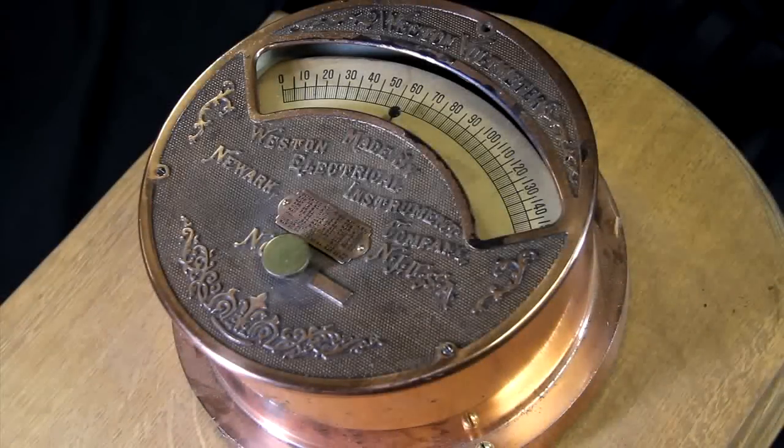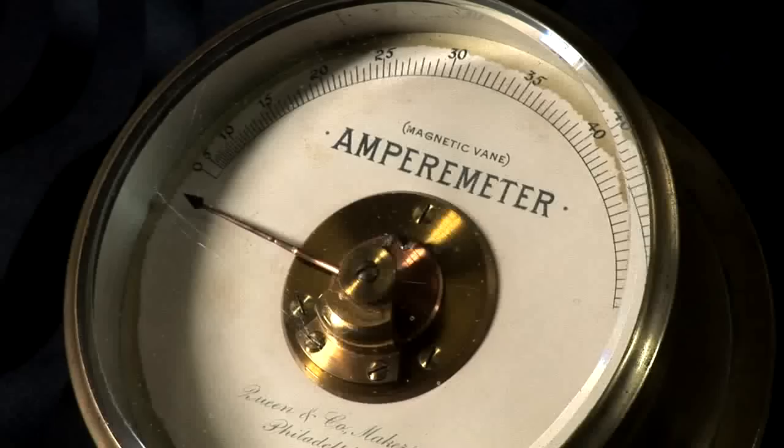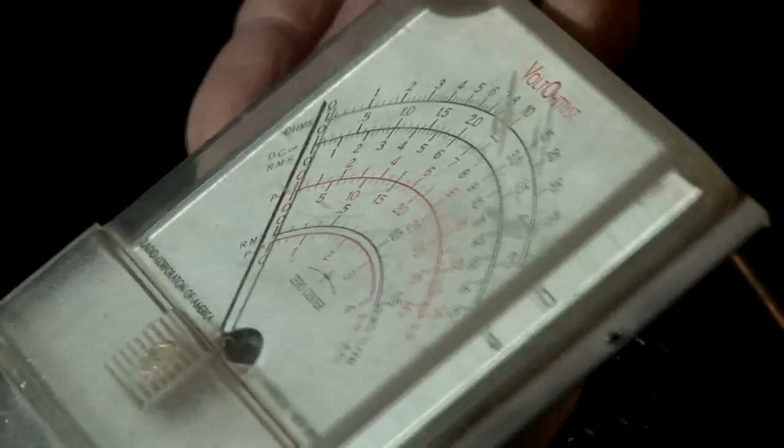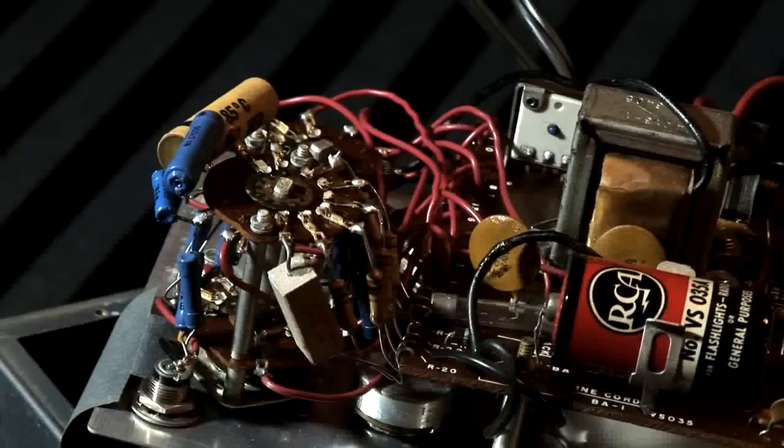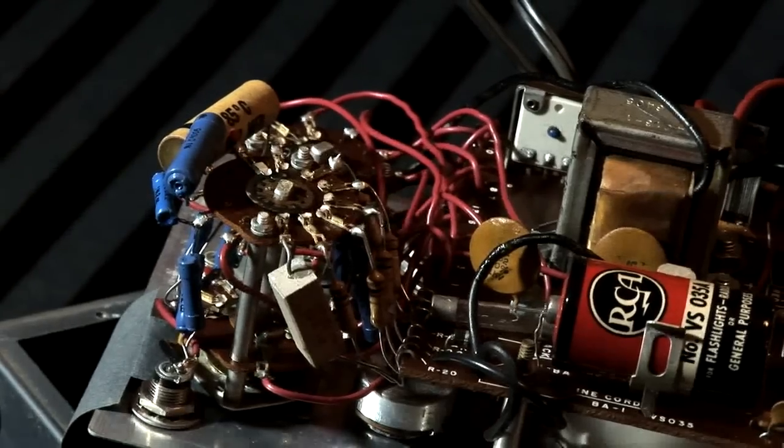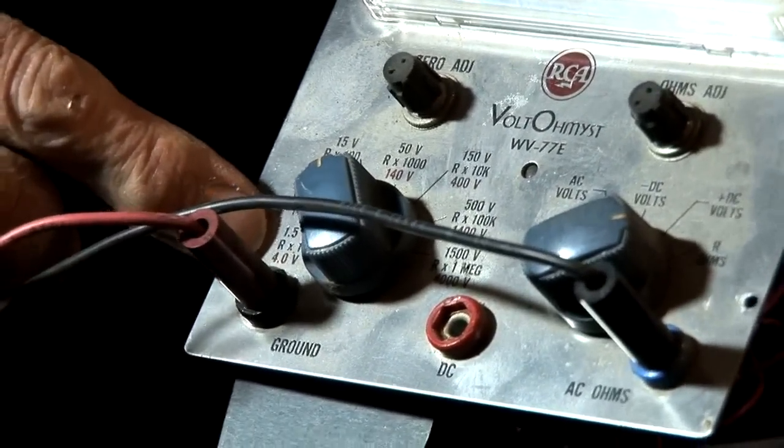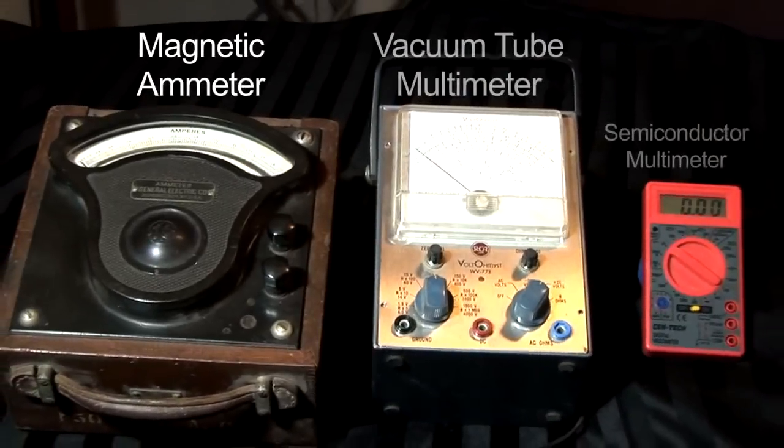Early ammeters and voltmeters caused a disruption of the circuit that was being measured. However, vacuum tubes and semiconductors revolutionized our universe of instruments. With vacuum tubes and resistors, we could build much more sensitive instruments that did not disturb the circuits and enabled the development of multimeters.